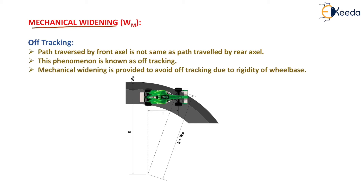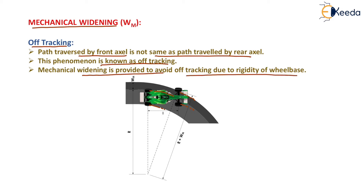In mechanical widening, the problem is off-tracking — that is, the path traversed by the front axle is not the same as the path travelled by the rear axle. As shown in the diagram, the path travelled by the front axle and the path travelled by the rear axle are different. This phenomenon is known as off-tracking, and mechanical widening is provided to avoid it due to the rigidity of the wheelbase.